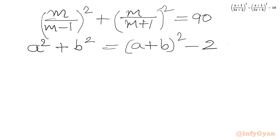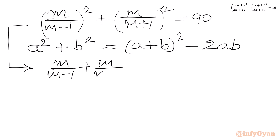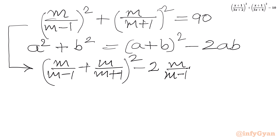I will write the algebraic formula: a²+b² = (a+b)² − 2ab. Applying this formula to the LHS, we get [m/(m−1) + m/(m+1)]² − 2 times [m/(m−1)] times [m/(m+1)] equal to 90.